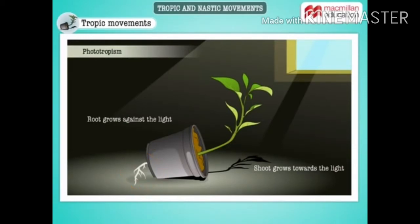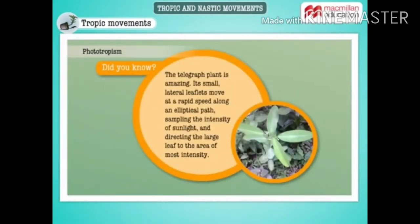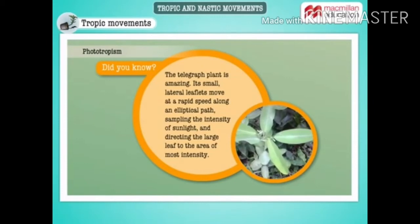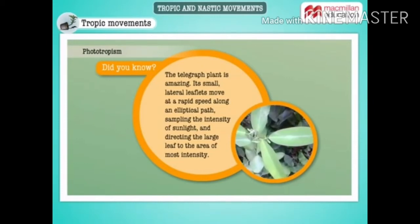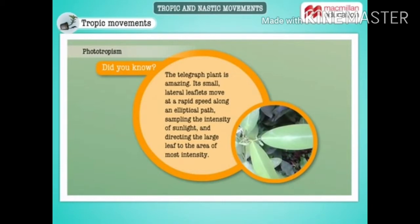You can see the shoot of the plant growing towards the light and the root growing against the light. The shoots are positively phototropic and the roots are negatively phototropic. Did you know that the telegraph plant is an amazing plant? Its small lateral leaflets move at a rapid speed along an elliptical path, sampling the intensity of sunlight and directing the large leaf to the area of most intensity.